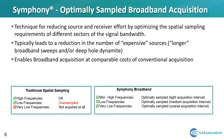So how can we address this increase in sweep time while considering our budget? We'll look at three examples utilizing our Symphony technique, or a distributed source array method, for reducing source and/or receiver effort by optimizing the spatial sampling requirements for different sectors of the signal bandwidth. This typically leads to a reduction in the number of expensive sources, the longer broadband sweeps, or potentially deep-hole dynamite shots, with the ultimate goal of acquiring broadband data at a comparable cost to conventional acquisition.